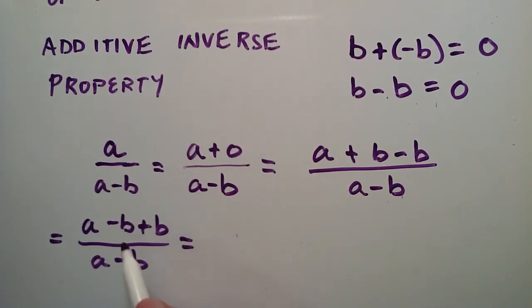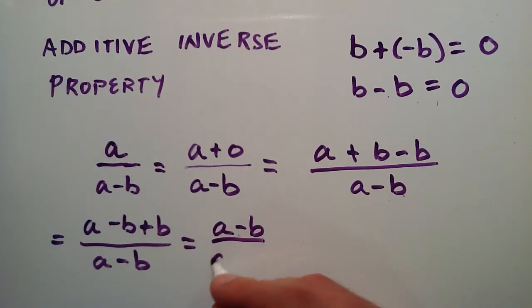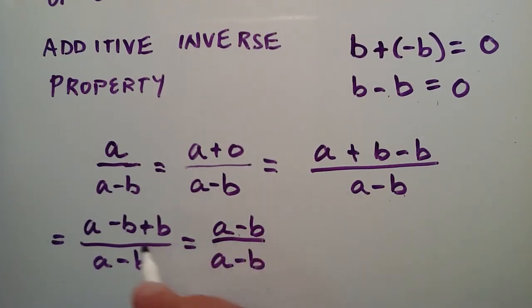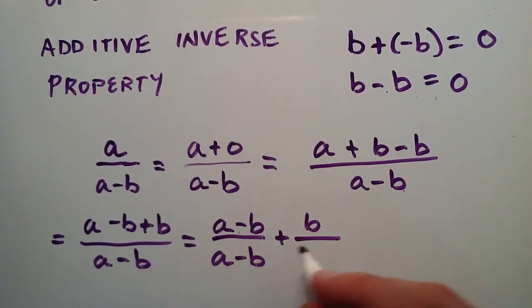And what we can do with something like this is we can separate the terms on top and place them over the same common denominator. So I'm going to do that, and I'm going to choose to leave the a minus b together. And that's going to be over a minus b. And I'm going to add that to the b divided by a minus b.